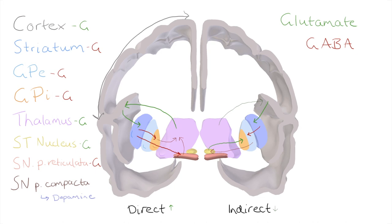The excited internal globus pallidus provides a strong inhibitory signal to the thalamus. And as a result, we've got a reduced excitatory output to the cortex, which we see as reduced muscle movement.